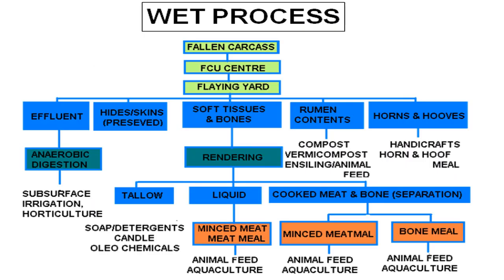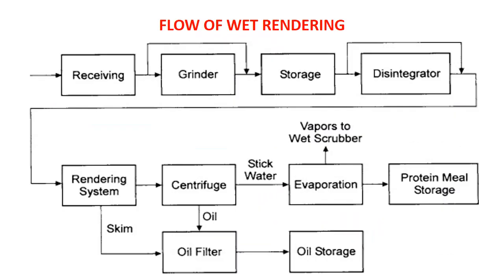Here we can see the utilization of all fallen carcasses and dead animals. On the left side there is separation of hide and skin, and mention of effluent treatment discussed earlier. The major processing is by wet rendering, where we get liquid fat that goes for industrial use in soap, detergents, candles, and wax. We can also prepare meat meal or bone meal for livestock or aquaculture feeding. If only bones are processed, wet rendering is very important because bones have very little moisture, making dry rendering unsuitable. Wet rendering is therefore very suitable for processing bones and making bone meal.